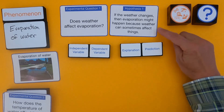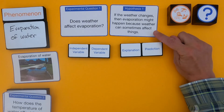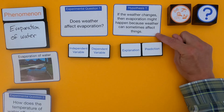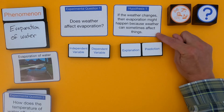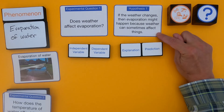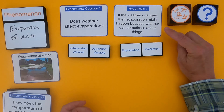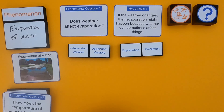This person's experimental question is: does weather affect evaporation? And then their hypothesis is: if the weather changes, then evaporation might happen because weather can sometimes affect things. So we're going to evaluate that question.